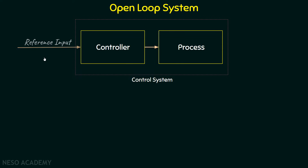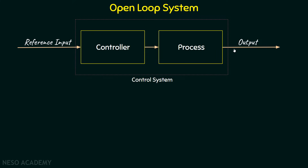On the left hand side we have the input to the system, and from now onwards we will call this the reference input. On the other side we have the output. So any control system will take an input, the controller will control the amount of input required for the process, the controlled input will move on to the process section, and it will be processed there in order to generate the output. In this way, we are done with the block diagram of the open loop system.